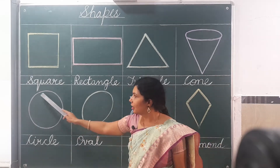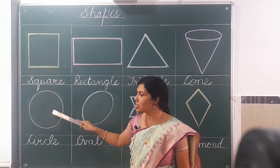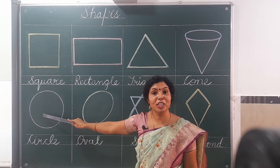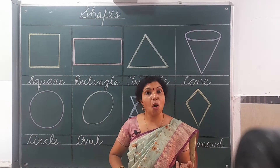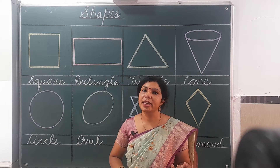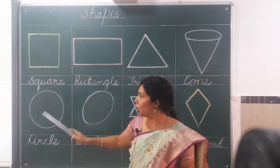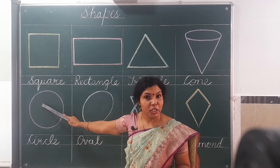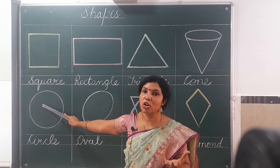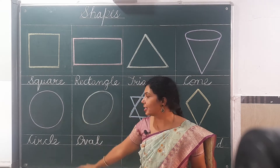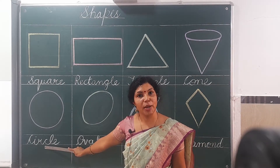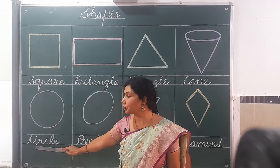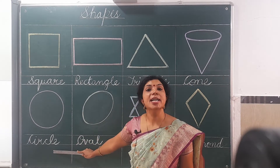Now next, this is a round shape. In this shape you can see the sun, a ball, and many types of things. This shape is called circle — C, I, R, C, L, E — circle.